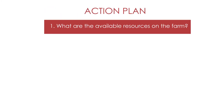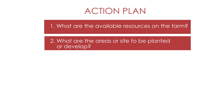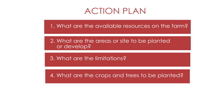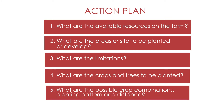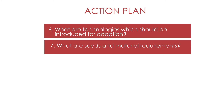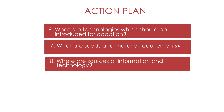Action plan questions to address: 1. What are the available or potential resources on the farm? 2. What are the areas or sites to be planted or developed? 3. What are the limitations? 4. What are the crops and trees to be planted? 5. What are the possible crop combinations, planting pattern, and distance? 6. What are the technologies which should be introduced for adoption? 7. What are the seeds and material requirements? 8. Where are sources of information, technology, seed, and other materials?